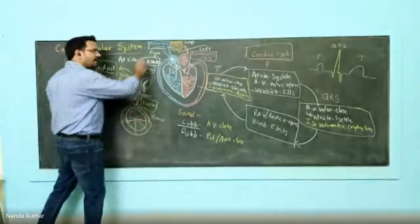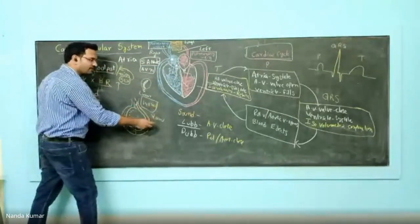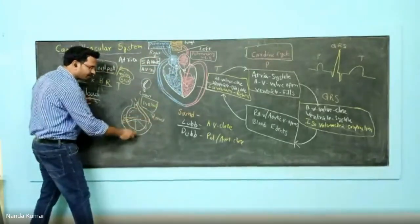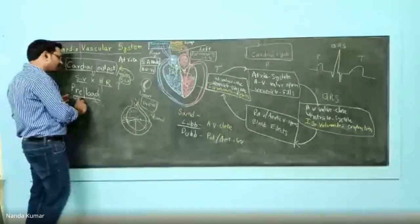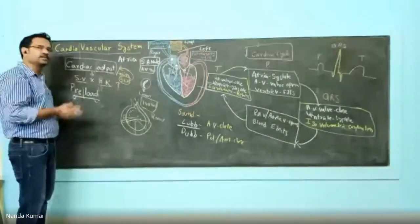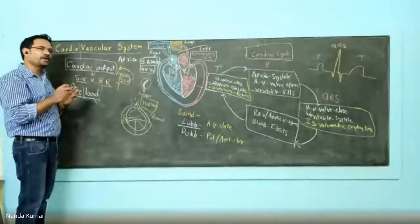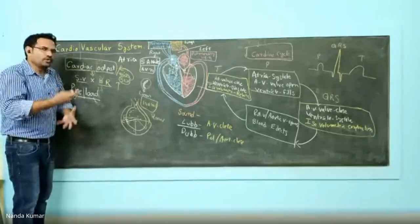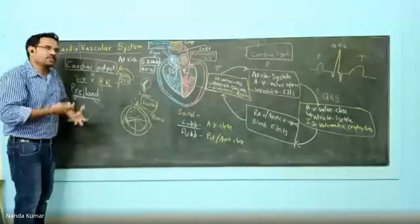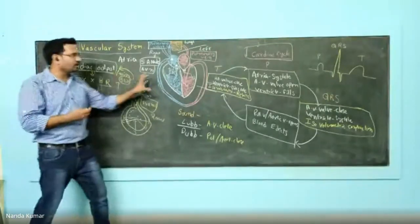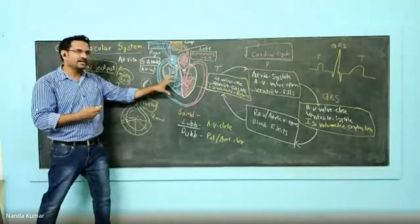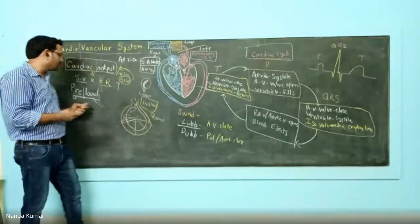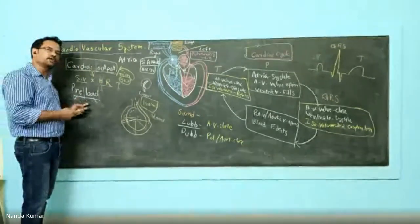If more blood reaches the heart — instead of 140, if you have 200 ml — that puts pressure on the walls of the heart. That is technically known as preload. Pre means before contraction; load is whatever amount of blood is there before contraction — it is a kind of load. That load is called preload.